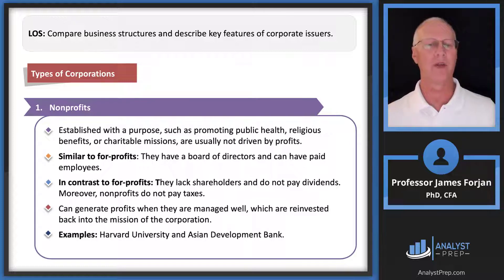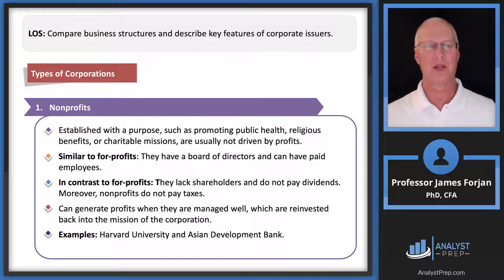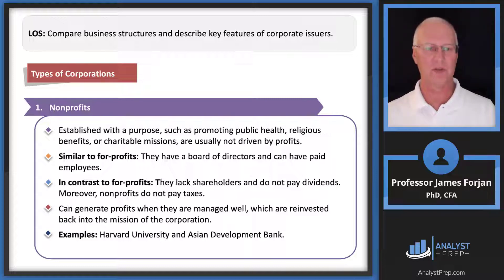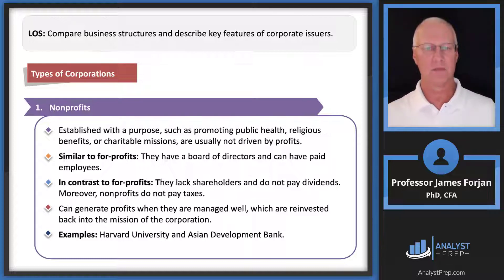Types of corporations include not-for-profit entities such as hospitals, religious affiliations, and charitable organizations — they're not usually driven by profits. However, the most successful non-profits are run as businesses, making them more financially successful. Most non-profits have a board of directors and paid employees — some receiving very large salaries, as fascinating articles in the Wall Street Journal often highlight. You should be reading the Wall Street Journal every day.